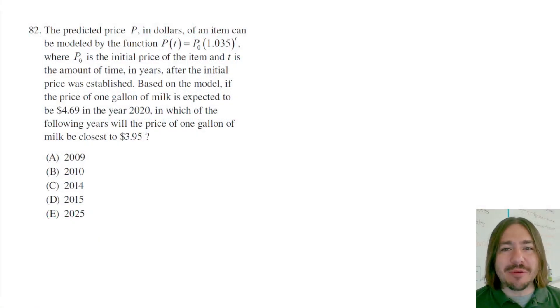Hey y'all, welcome back. Number 82 says the predicted price, p in dollars, of an item can be modeled by the function p of t, and the function is given here.